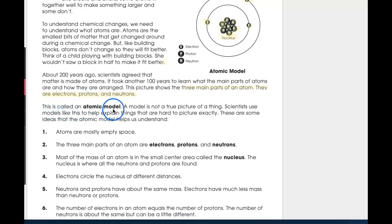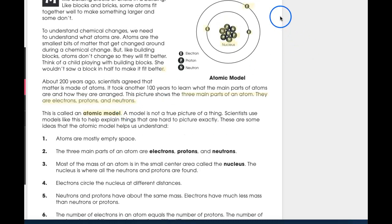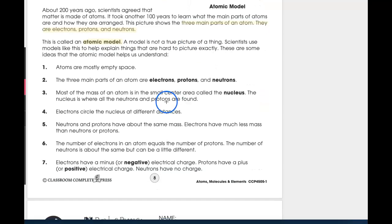I want you to make a connection here. There are the same number of protons that there are electrons. So you have three protons and three electrons. Now the neutrons, they're different. There can be as many or there can be as little as there needs to be. Here is this label though. It says nucleus. Remember guys, the center of your atom that contains the protons and neutrons is called the nucleus. This is called the atomic model. A model is not a true picture of a thing. Scientists use models like this to help explain things that are hard to picture exactly. These are some ideas that the atomic model helps us understand.